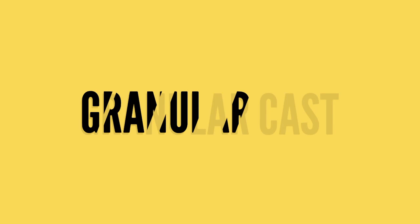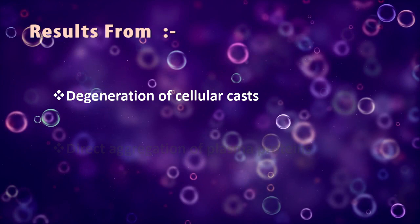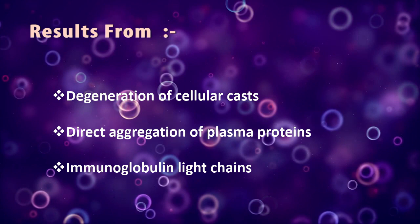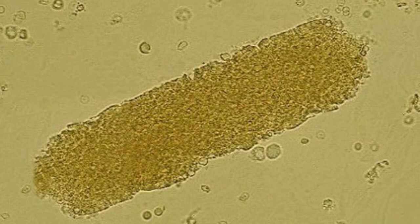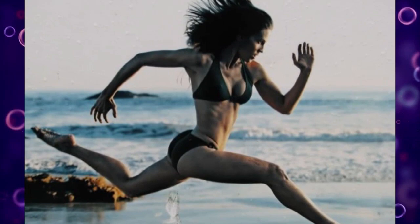Granular casts result either from the degeneration of cellular casts or direct aggregation of plasma proteins or immunoglobulin light chains. They have a textured appearance ranging from fine to coarse, and are generally more cigar-shaped with a higher refractive index than hyaline casts. They are seen after strenuous exercise, chronic renal diseases, and acute tubular necrosis.